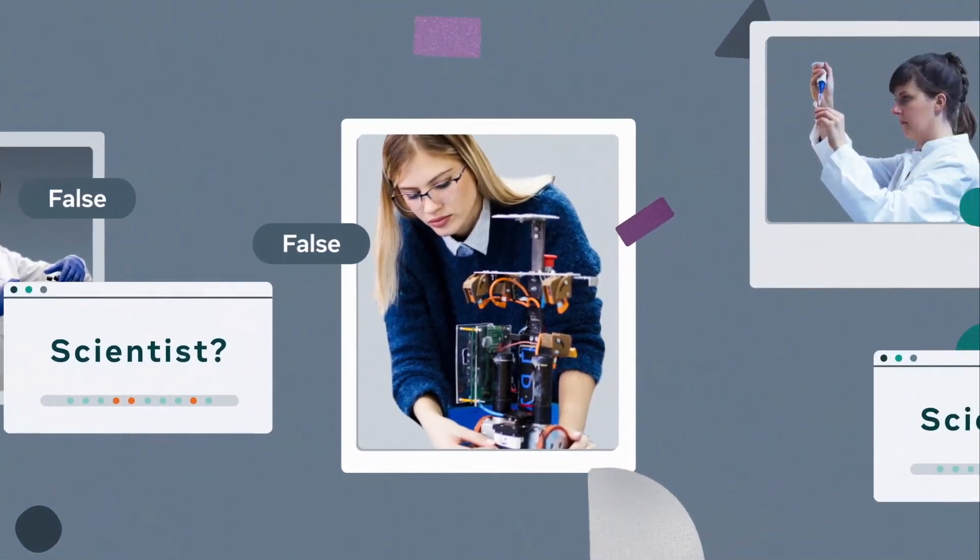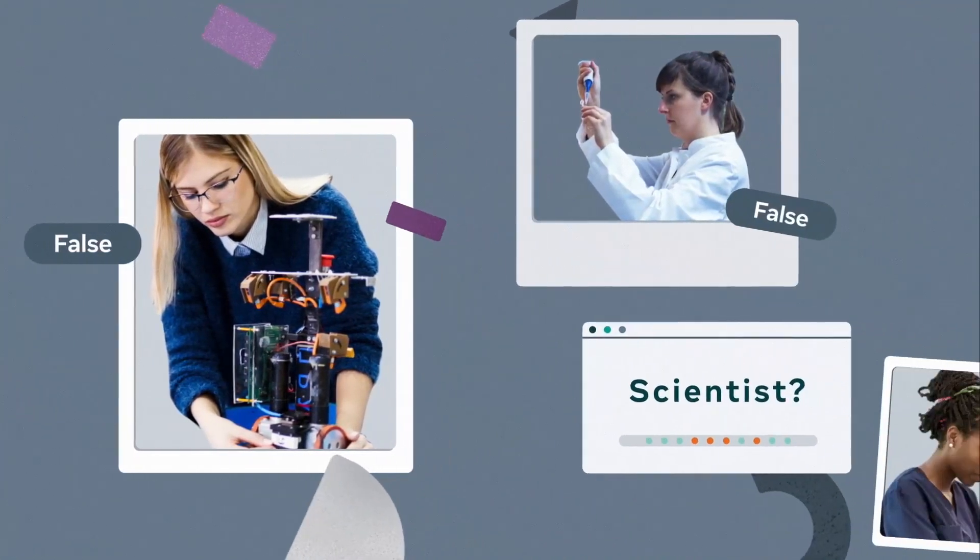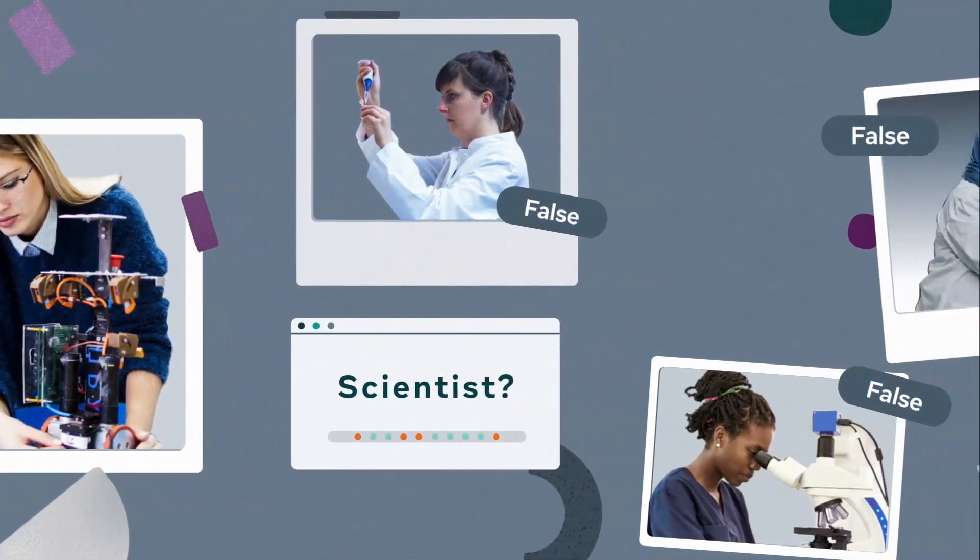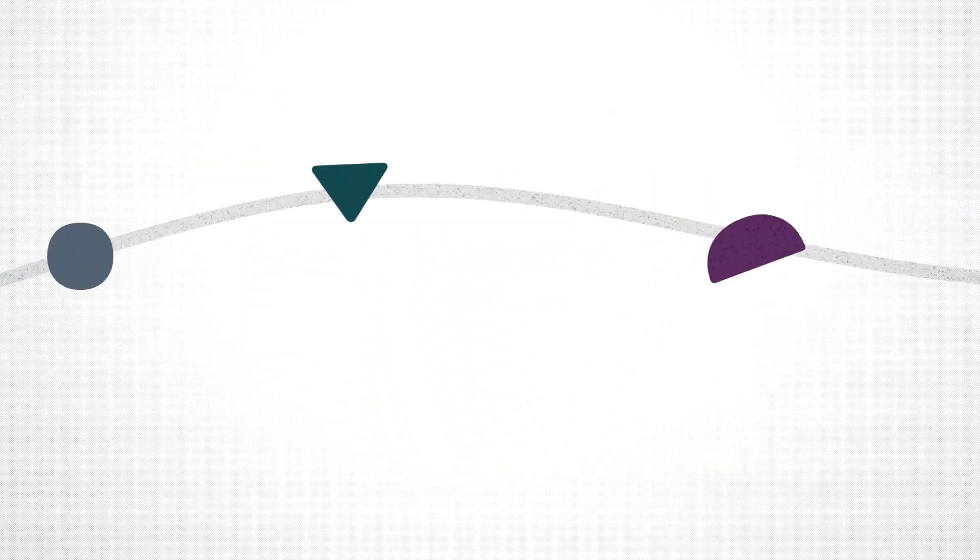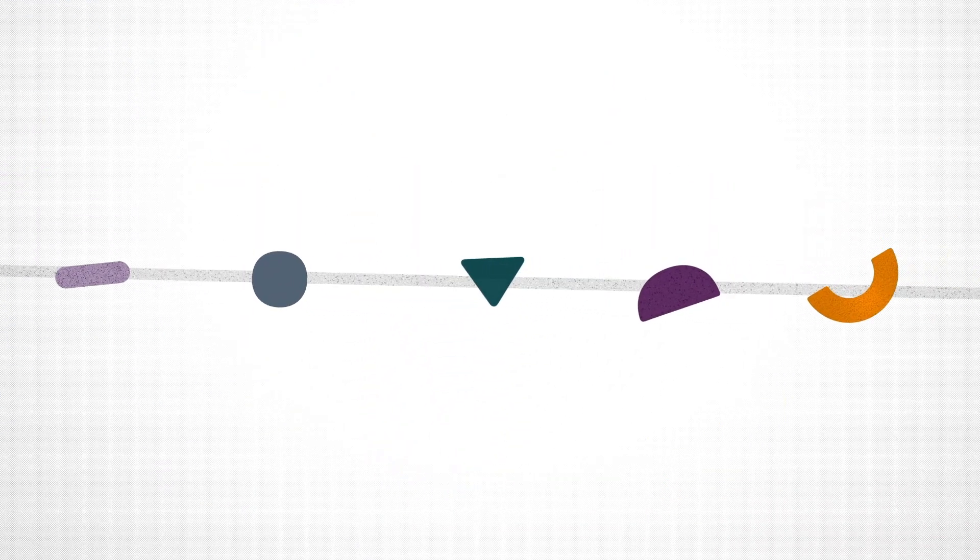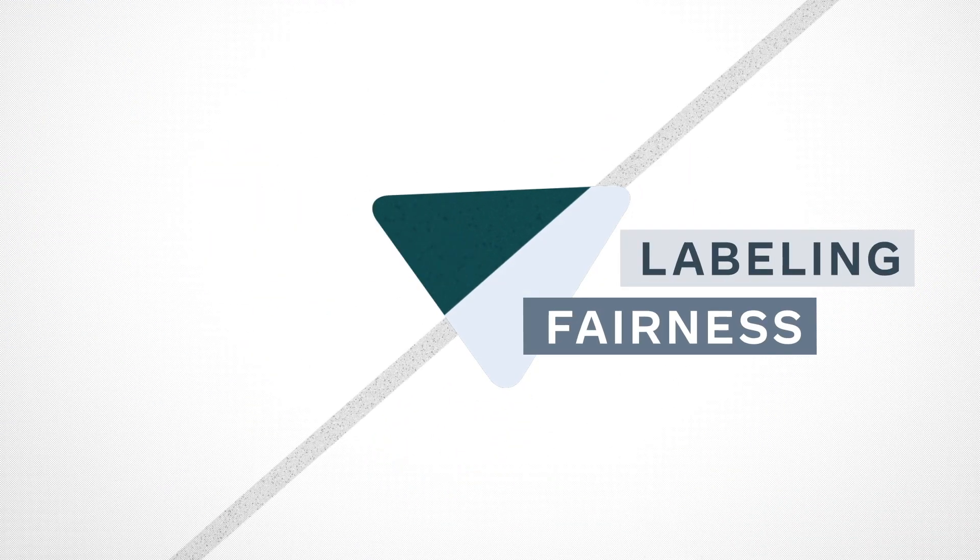It will be more difficult for that AI system to recognize that anyone can be a scientist regardless of gender or appearance. In a case like this, Fairness Flow could help identify statistical bias by measuring two things: model fairness and labeling fairness.